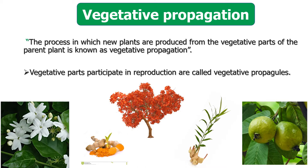Here some pictures are presented. The first picture is jasmine, the second one is turmeric, the third picture is ginger, and the fourth picture is guava. In these plants, new plants can be raised vegetatively through vegetative propagation.